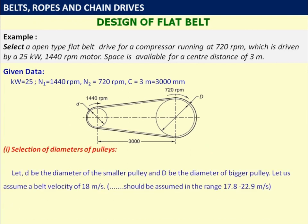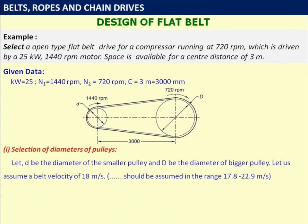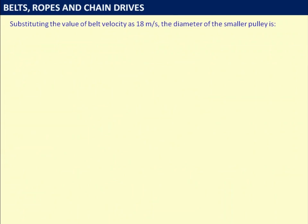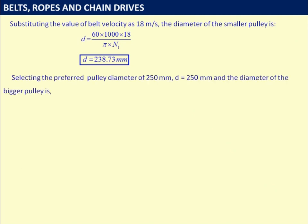For selection of pulley diameters, let d be the diameter of the smaller pulley and D the diameter of the bigger pulley. We assume a belt velocity of 18 meters per second. Note: belt velocity should be selected in the range 17.8 to 22.9 meters per second. Using V = π·d·N1 / (60×1000), the diameter of the smaller pulley is d = 60×1000×18 / (π×N1) = 238.73 mm. Selecting the preferred pulley diameter of 250 mm.